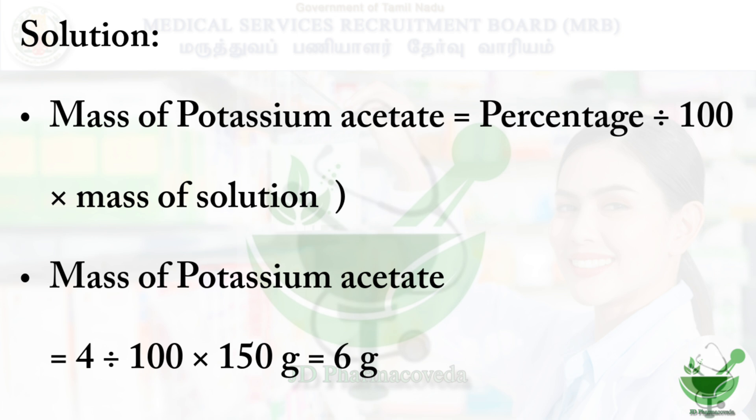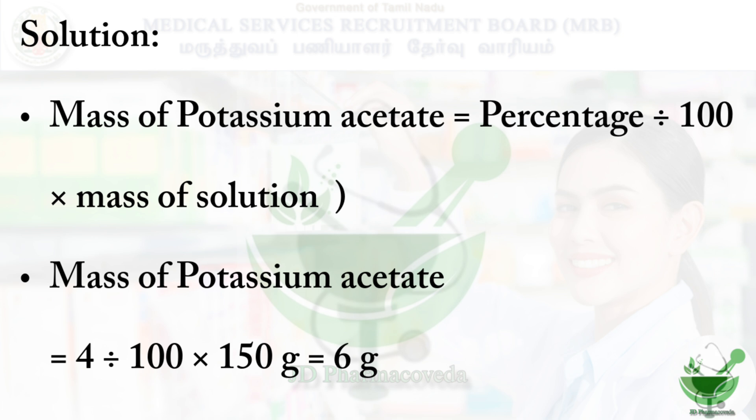So: (4 / 100) × 150 grams = 6 grams of potassium acetate. Then for the mass of water, we subtract: 150 − 6 = 144 grams of water.